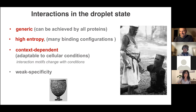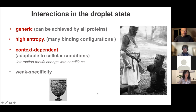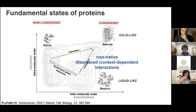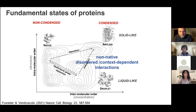How do we describe the interactions in the droplet state? The main characteristics are: they must be generic—achievable by all proteins; they must have high entropy for a liquid-like state; they must be context-dependent because droplets are modulated by cellular conditions; and they have specificity we can compute. Exhaustively searching for motifs won't be meaningful because you need something applicable to all proteins. So let's try to compute disordered interactions and see if we get the droplets—and this is what we did.